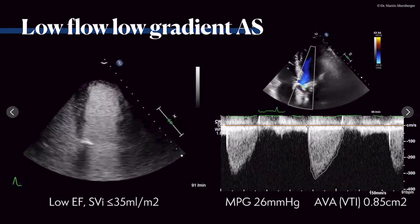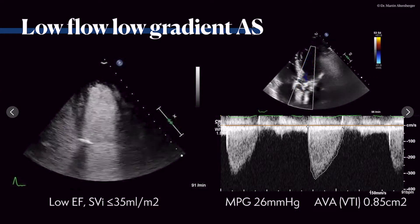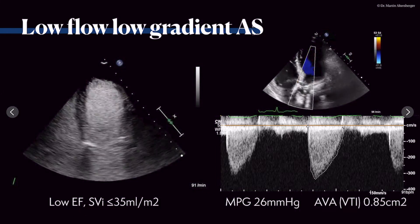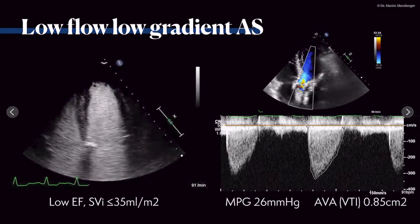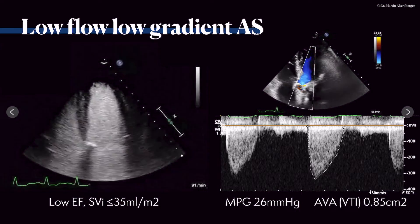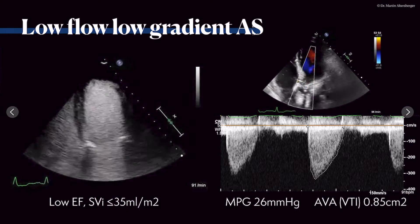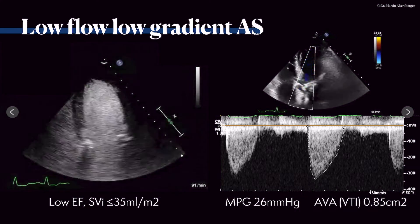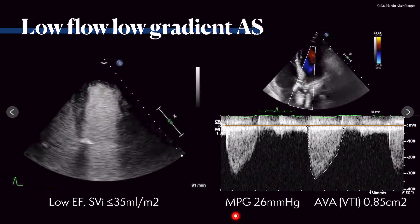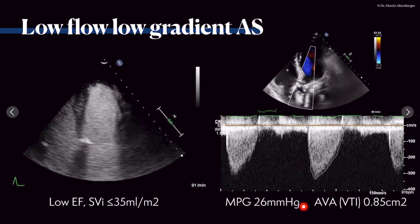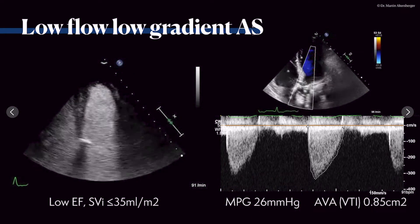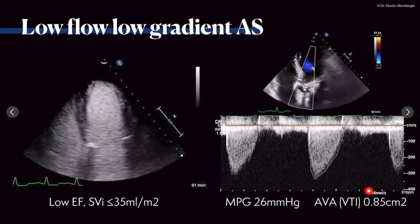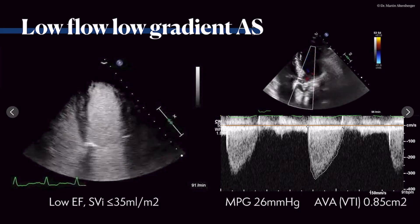How can we evaluate patients with low-flow, low-gradient aortic stenosis? Here you can see a low ejection fraction of approximately 35% with reduced left ventricular function, and the stroke volume index was below 35 milliliters per square meter. When we evaluate the continuous wave Doppler signals seen here, we get a mean pressure gradient of 26 mmHg and an aortic valve area showing severe aortic stenosis at below 0.85 square centimeters.